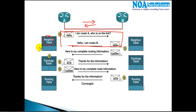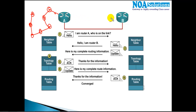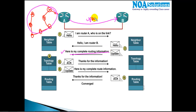Once the neighbor relationship is established — once they are neighbors — the next step is to exchange routing information. Router A is already connected to some routers, and it says to Router B: 'You are my new neighbor. I have some networks on this side and I'm going to send you my complete routing information.' It sends a full update to the new neighbor.